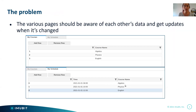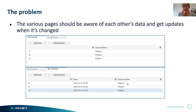The various pages should be aware of each other's data and get updates when it changes. For example, if I add another course — a Hebrew course — I would like the dropdowns in the schedule rows to also contain that new Hebrew course option.